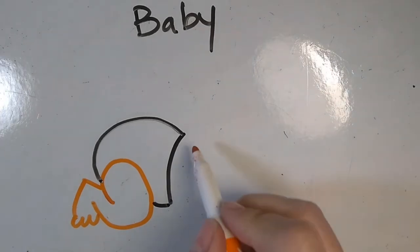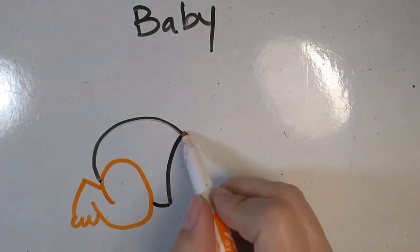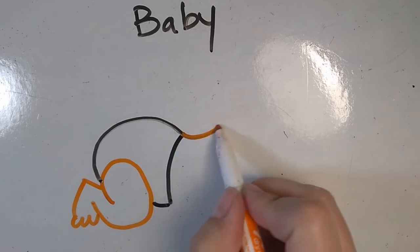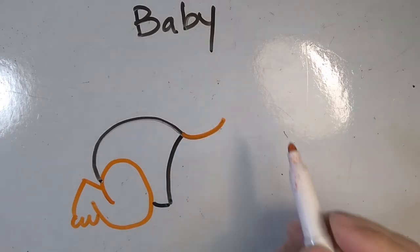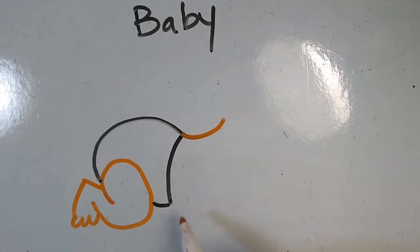Next we're going to draw the back. So at the top of the diaper, draw a little curved line up. And then we're going to draw a little bit of the stomach. So draw another little curved line at the bottom of the diaper.